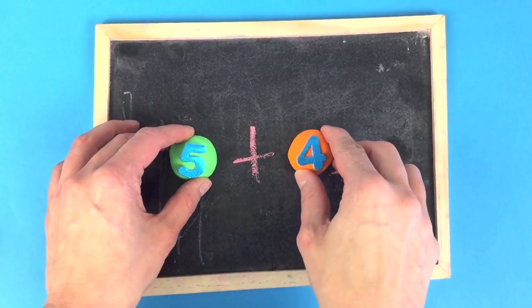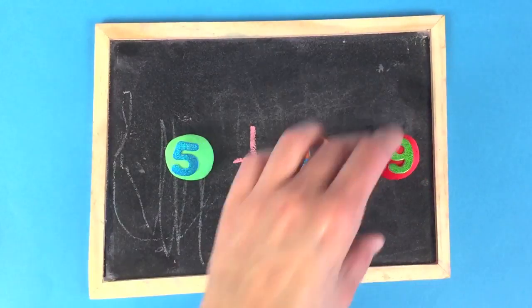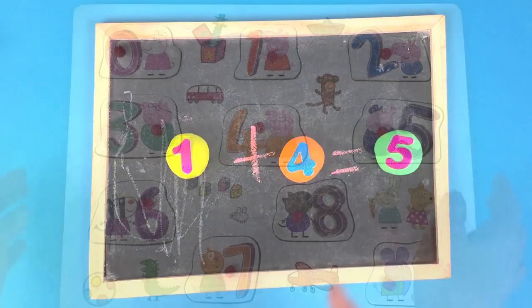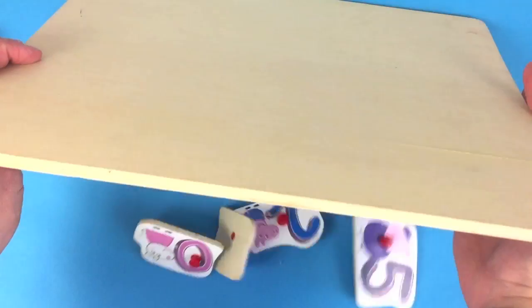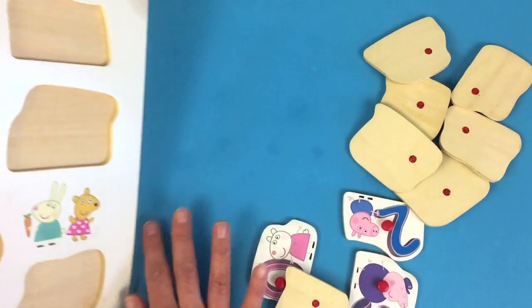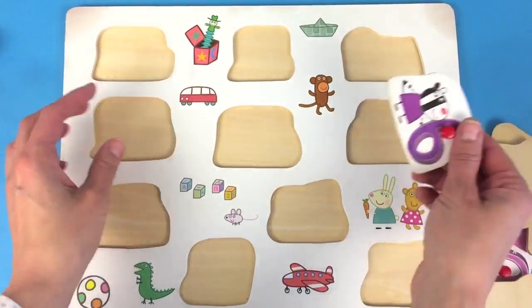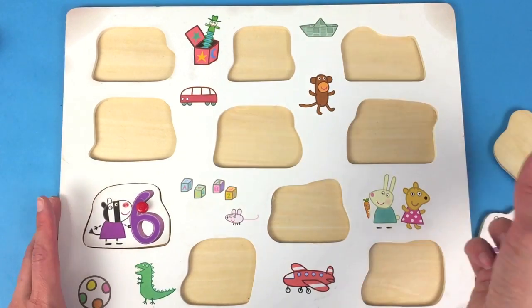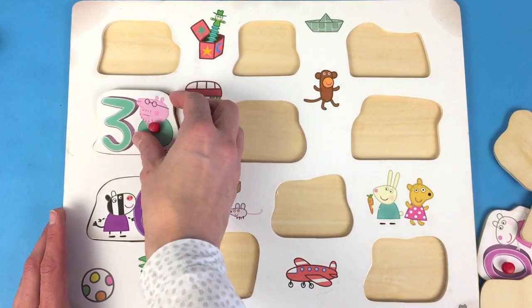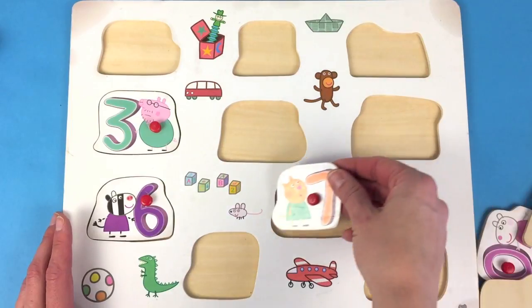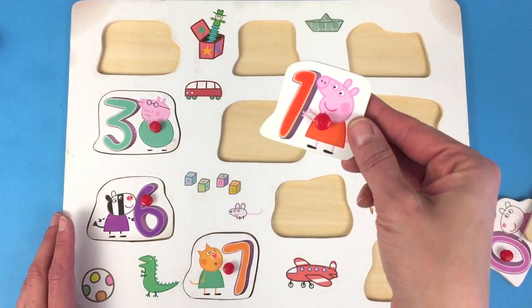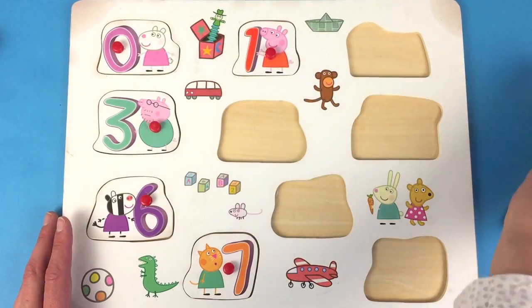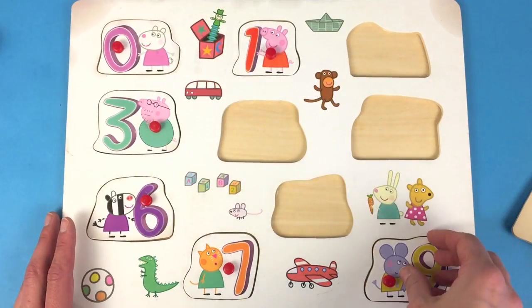5 plus 4 is 9. 1 plus 4 is 5. 7 plus 1 is 8. 9.